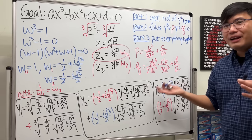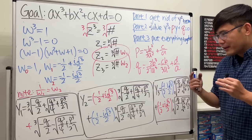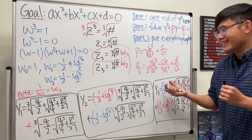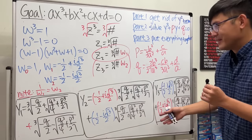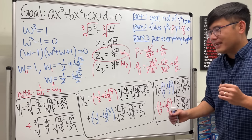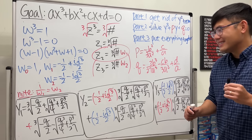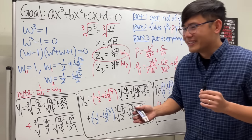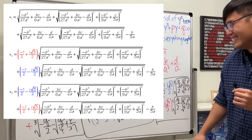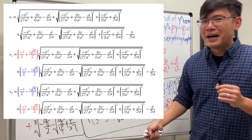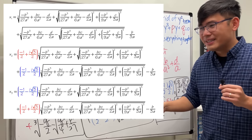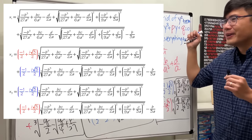For y₃, it's just the omega values swapped: y₃ = ω₂·∛(-q/2 + √(q²/4 + p³/27)) + ω₁·∛(-q/2 - √(q²/4 + p³/27)). So ladies and gentlemen, y₁, y₂, y₃ — that's the cubic formula! In part three we put everything together by substituting p and q back in terms of a, b, c, d. This is how you derive the cubic formula. Subscribe — next I'll show you how to find sin(10°) using the cubic formula!